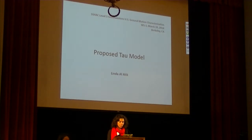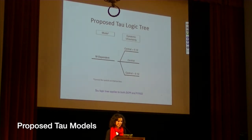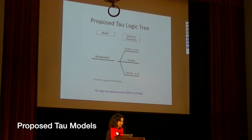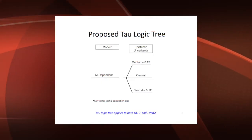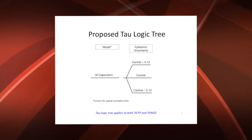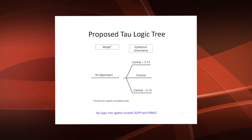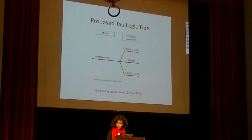The proposed tau model is relatively simple at this preliminary stage compared to phi. We have the same tau logic tree for both Diablo Canyon and Palo Verde. It's a magnitude-dependent central branch, plus and minus 0.12, and I will explain how I got these numbers in a little bit.